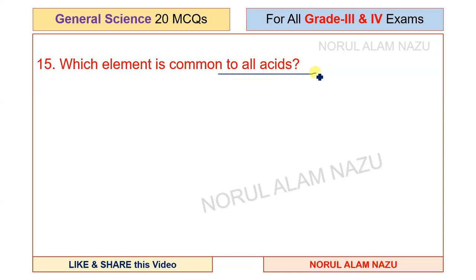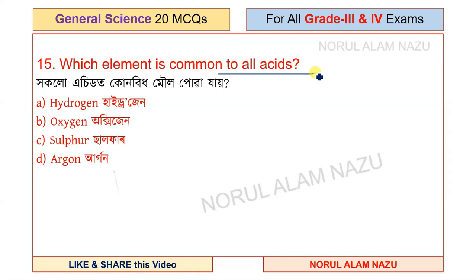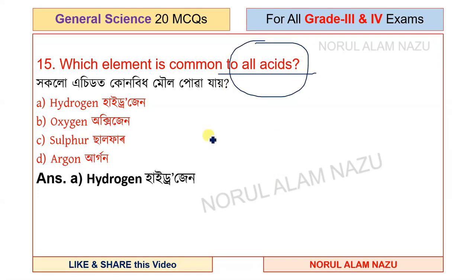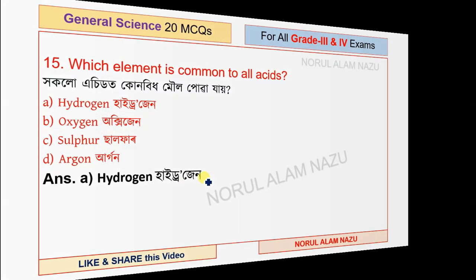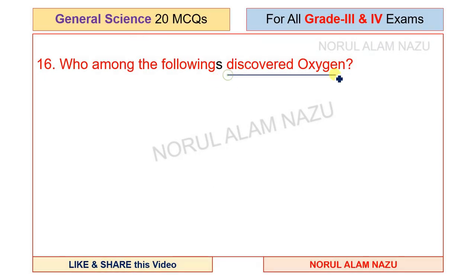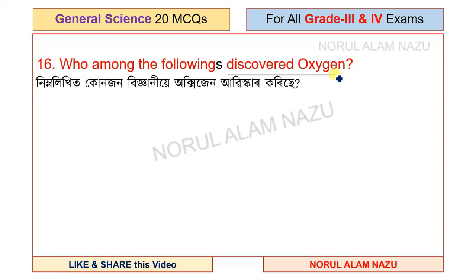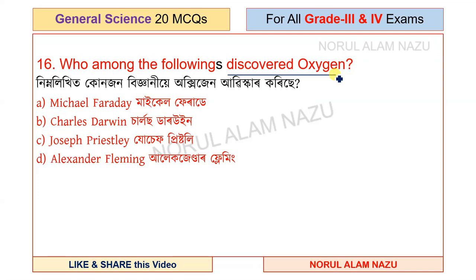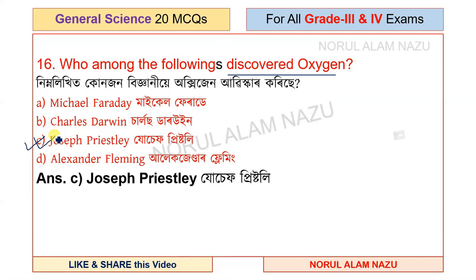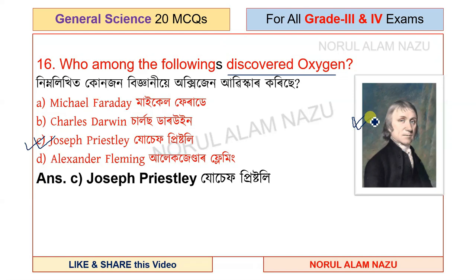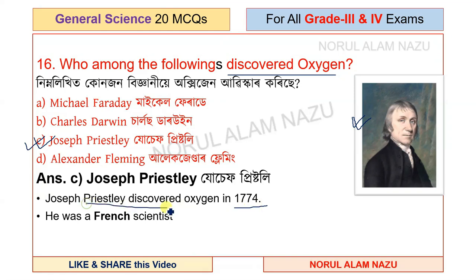Question number 15: Which element is common to all acids? The options are hydrogen, oxygen, sulfur, and argon. The answer is hydrogen. Question 16: Who discovered oxygen? The options include Michael Faraday, Charles Darwin, Joseph Priestley, and Alexander Fleming. The answer is Joseph Priestley.